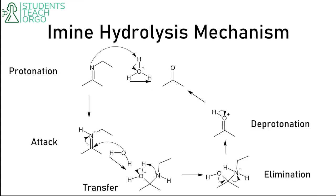The first step of hydrolysis is once again protonation — we protonate the imine to get the iminium ion, and then the iminium ion gets attacked by a molecule of water. We kick back those electrons and reform the tetrahedral intermediate. Then we do a transfer again to make the amine a good leaving group, use the lone pairs from the hydroxyl to kick out the amine, and deprotonate at the end. It's basically the exact reverse of imine formation.